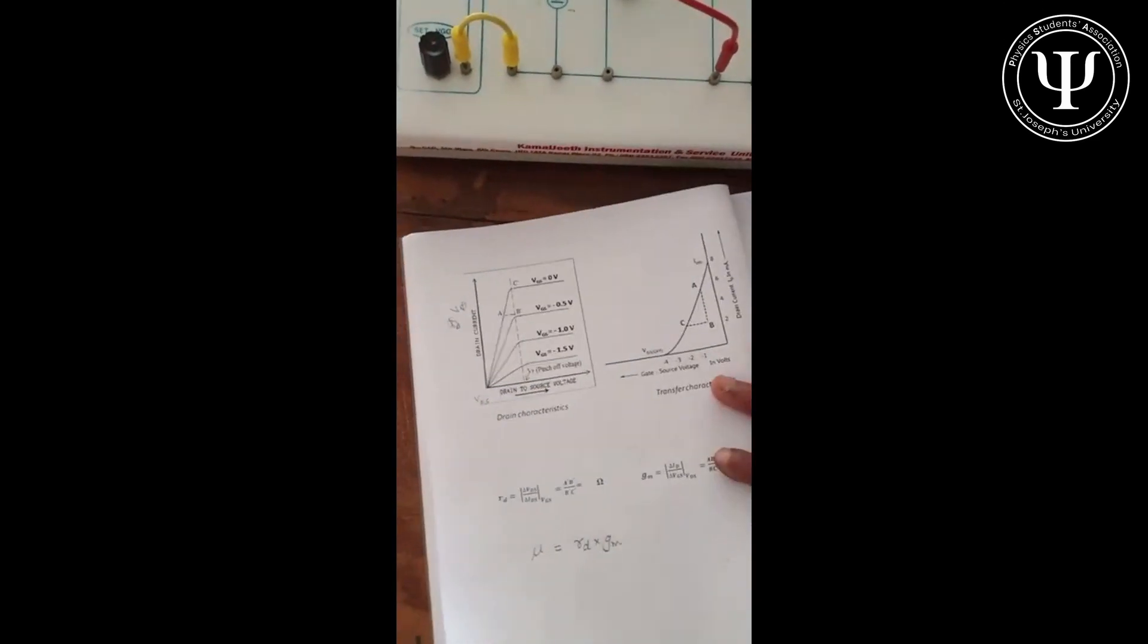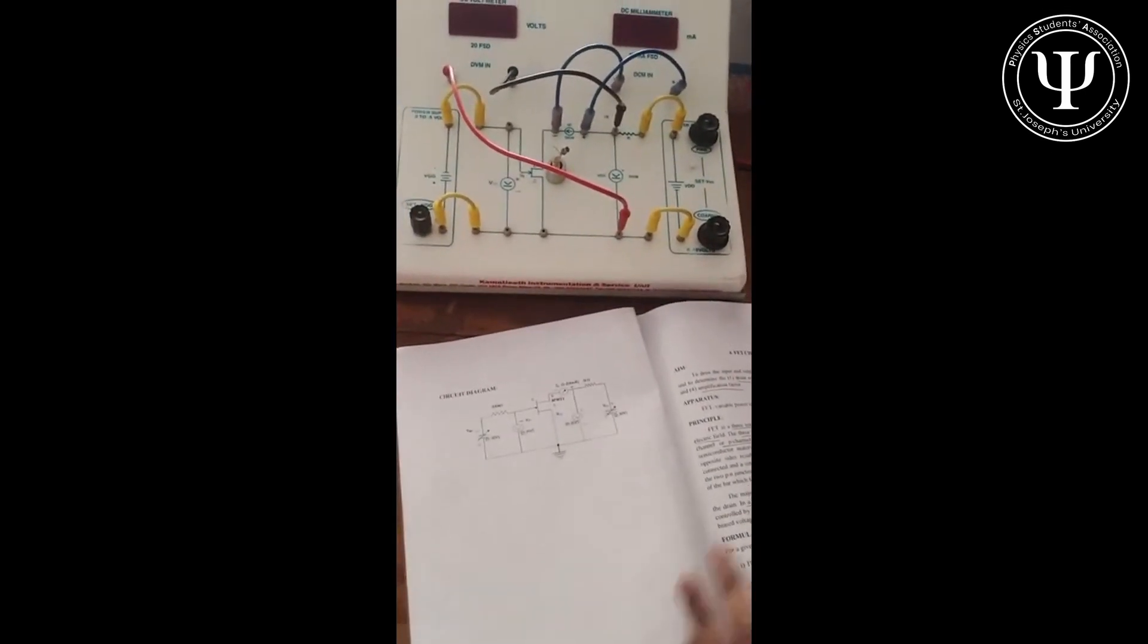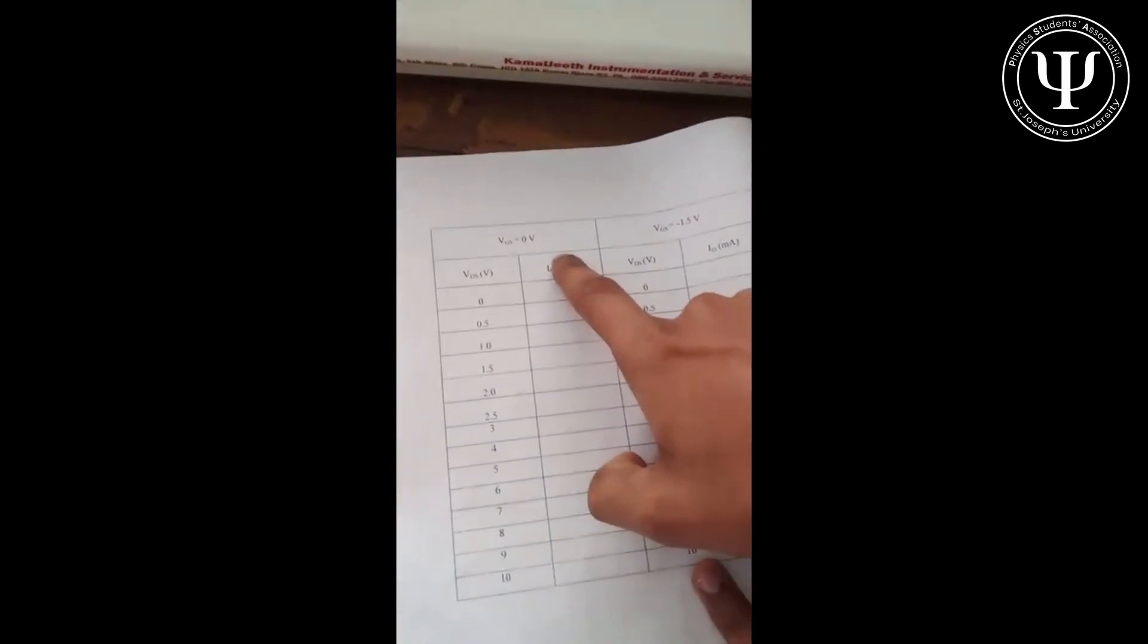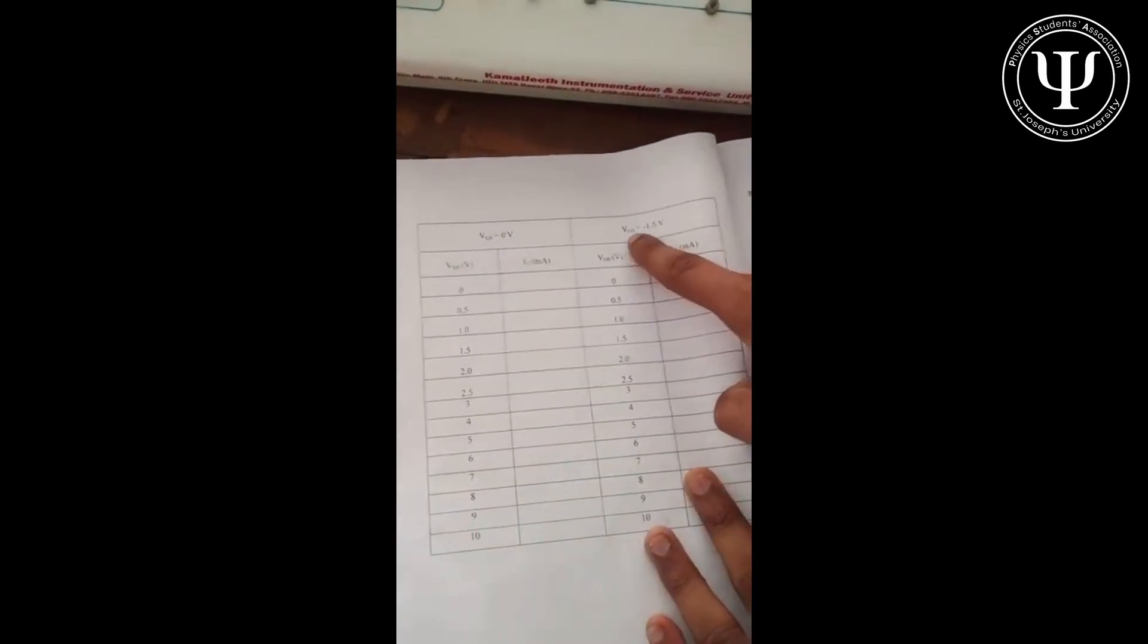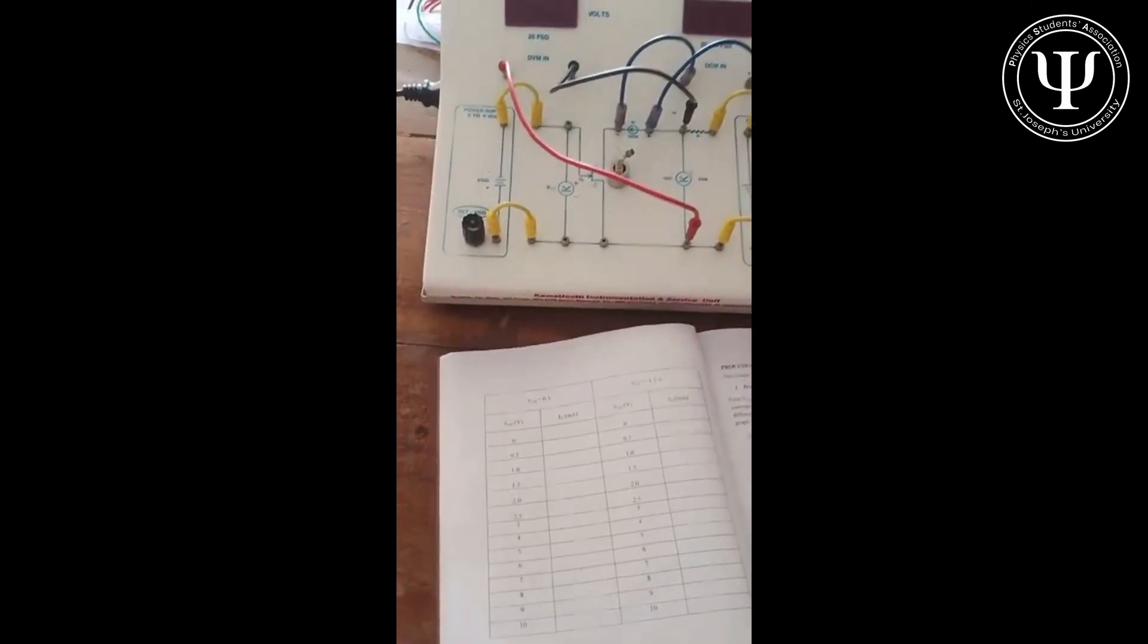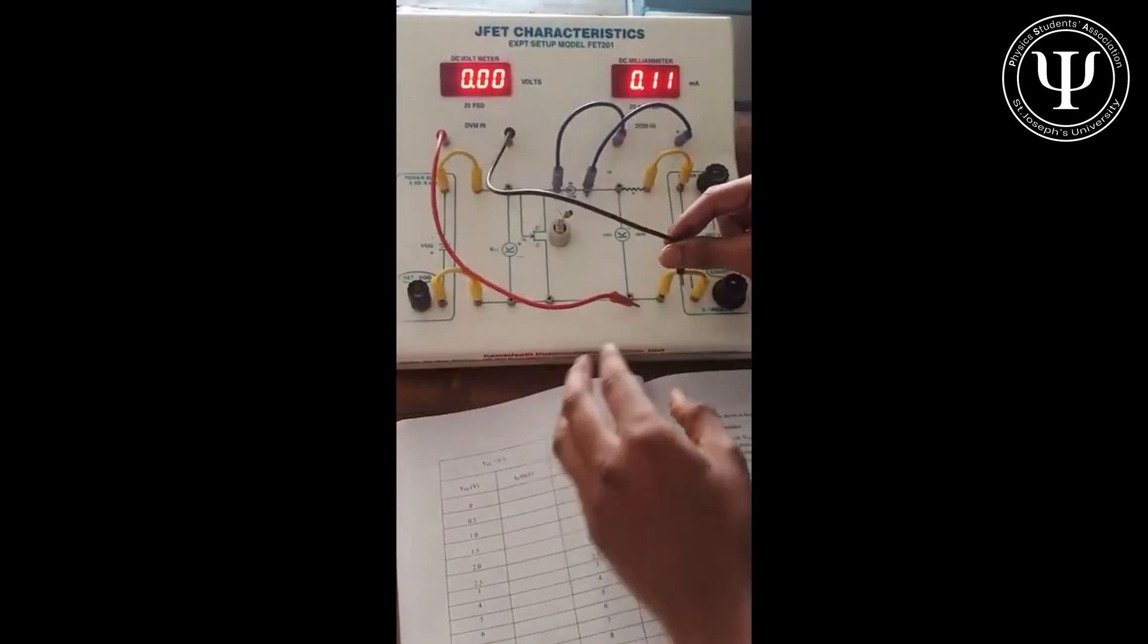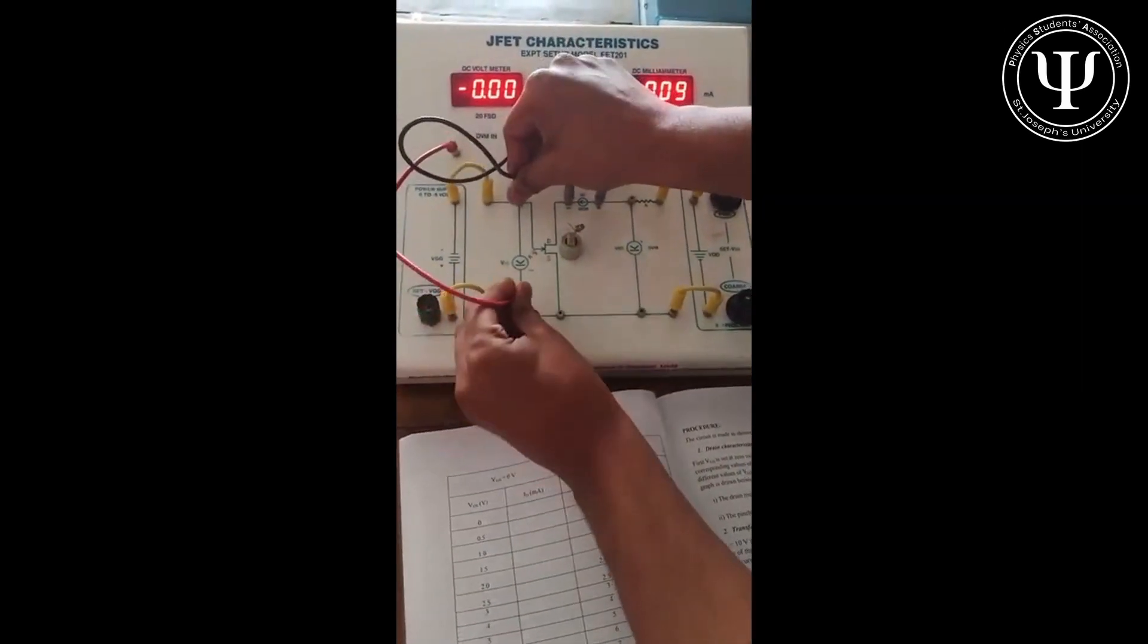This is how you connect the apparatus. But if you've noticed, our model graph has not just one curve but multiple curves. Remember, RD drain resistance is calculated keeping VGS constant. So we take two scenarios in our experiment. We first set VGS to zero volts and check how ID is changing with respect to VDS. Then we set VGS to minus 1.5 volts, again a constant, and then we calculate the change of ID with respect to VDS.